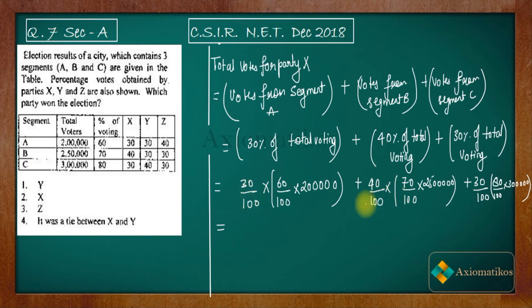3 lakh are the total number of voting from sections A, B, and C. So we are finding out its 30%, 40%, and 30% again. Now let us calculate. So see, if you calculate all of this you will get 1 lakh 78,000. So 1 lakh 78,000 are the total votes for party X.